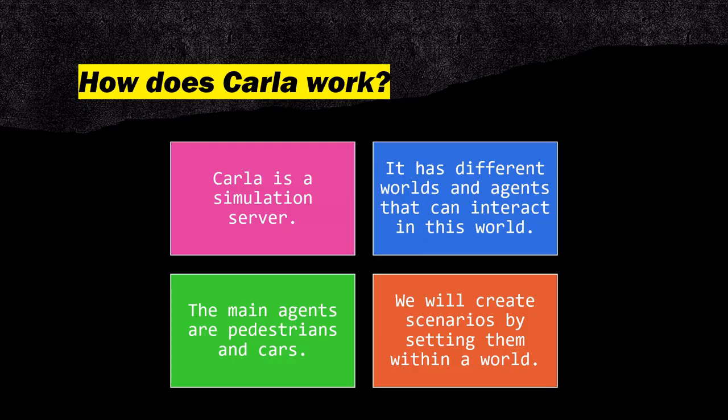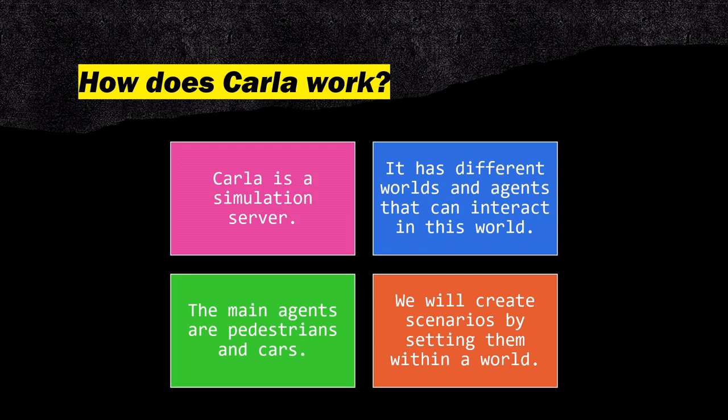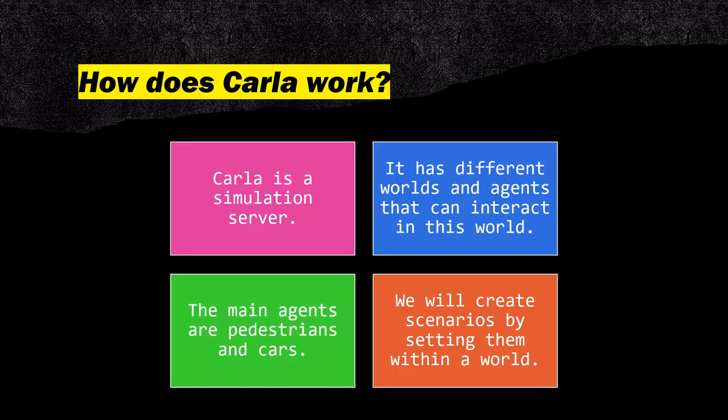To give you an overview of Carla, basically it is a simulation server. What we are going to do is use it with different scenarios, different cars, different pedestrians, etc. We will have a lot of different options in each specific world that we use in Carla. We will also have agents — the agents are going to be controlled by us, by artificial intelligence, or by a script. These agents are going to be cars, pedestrians, bikes, ambulances, and even the traffic lights are going to be controlled by the system. You can also control the dynamics of the weather, and basically we are going to create scenarios where we test our smart AI.